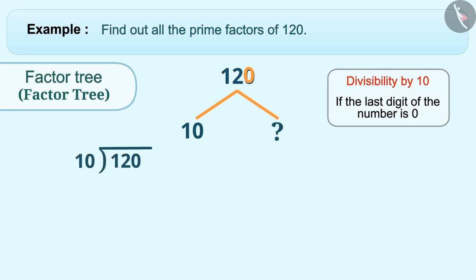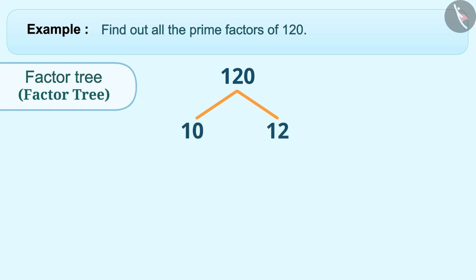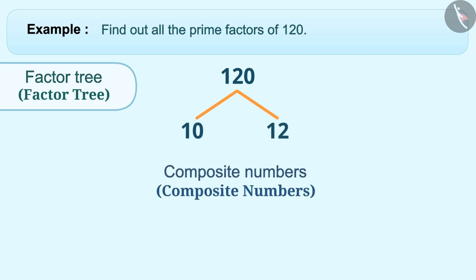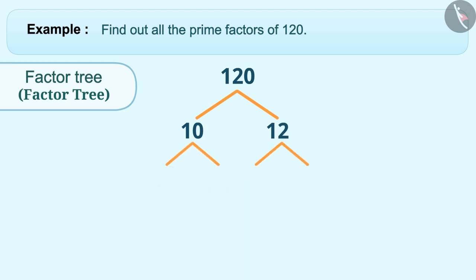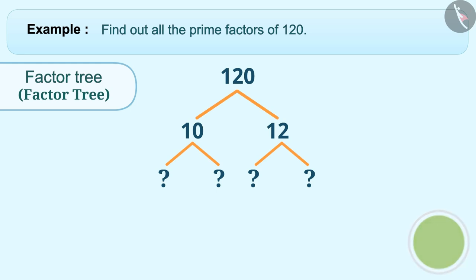One of the numbers in the factor pair of 120 is 10. To find the second number, we divide 120 by 10, giving us 12. Both 10 and 12 are composite numbers, so we can express them in their factor pairs and extend the factor tree. Think about what their factor pairs could be. The factor pair of 10 is 2 and 5, and the factor pair of 12 is 3 and 4.